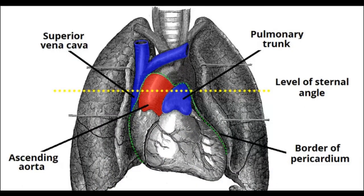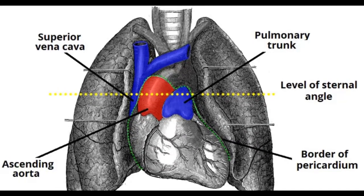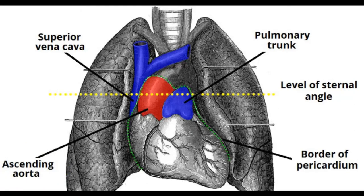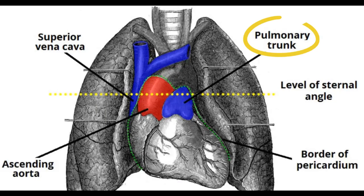Moving on to the middle mediastinum: you have the heart, the pericardium, the trachea, the bronchi, and lymph nodes. For the VANs, there are 5 in total. The artery is the ascending aorta and the pulmonary artery. The vein is the superior vena cava and the pulmonary vein. The nerve is the phrenic nerve.